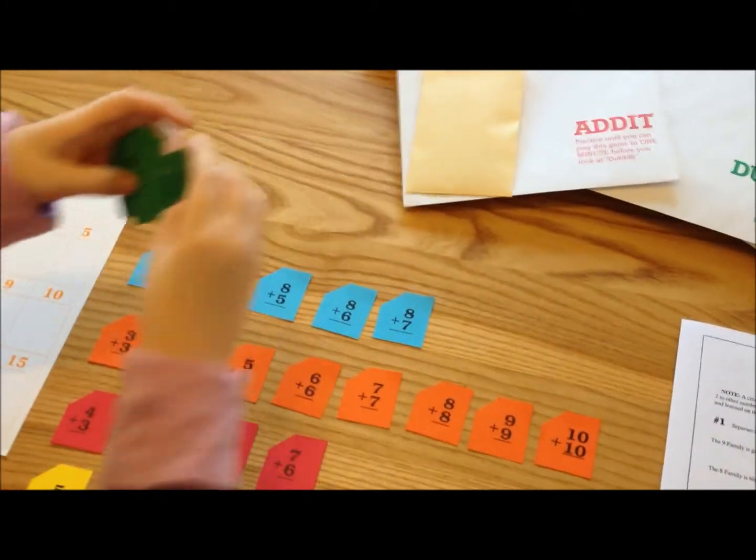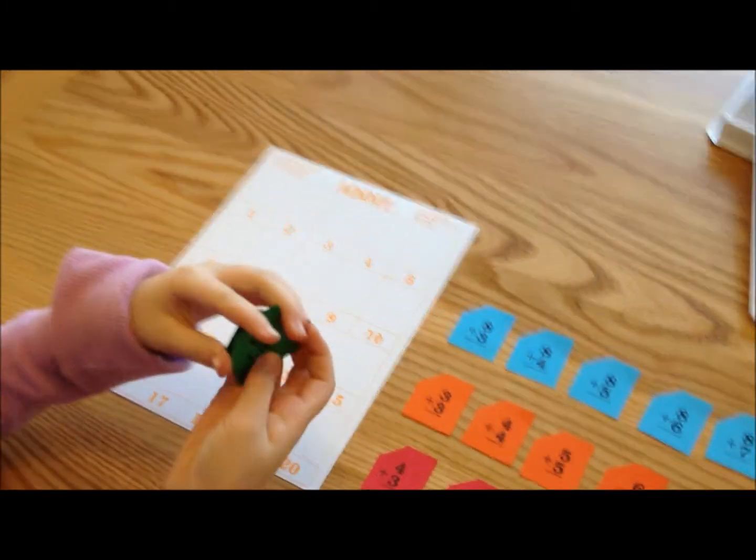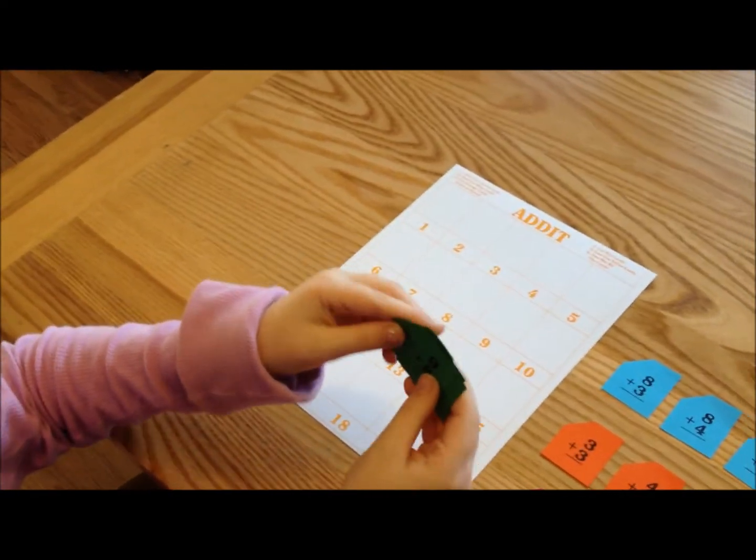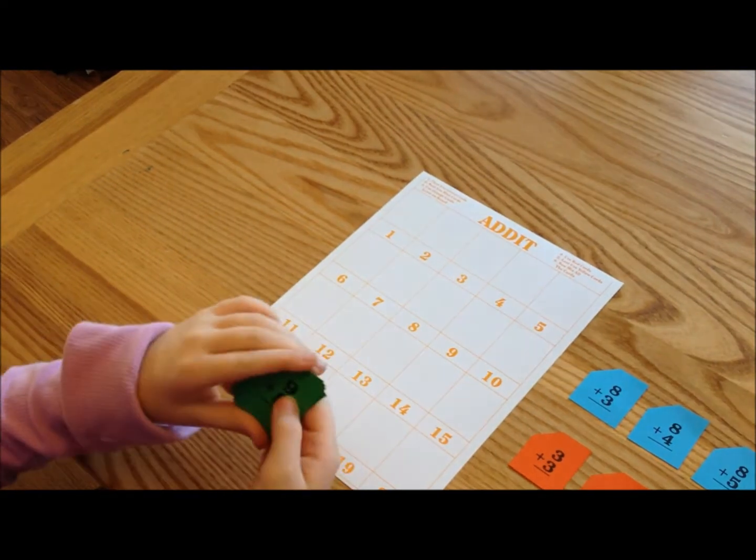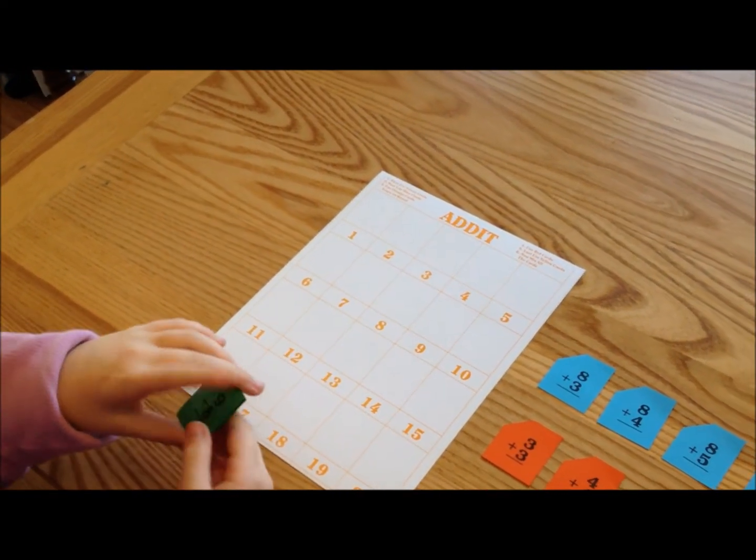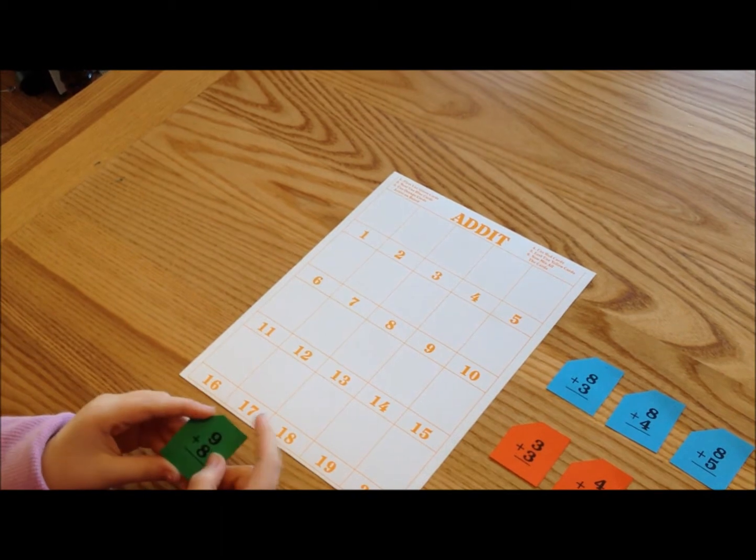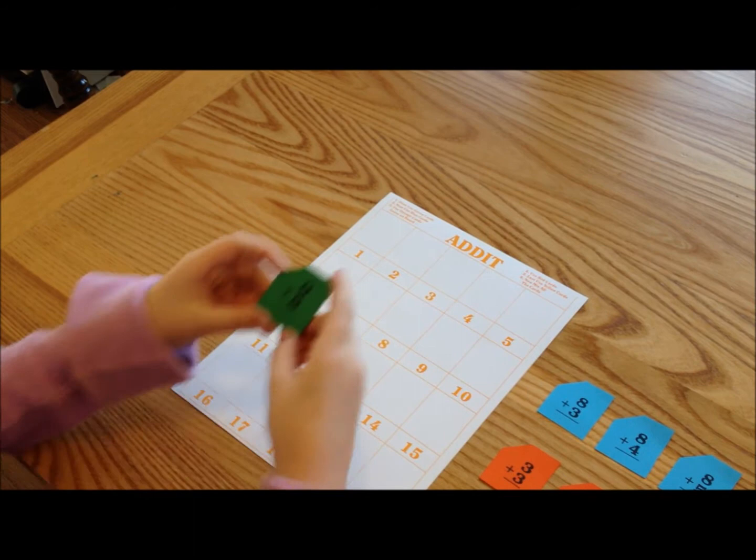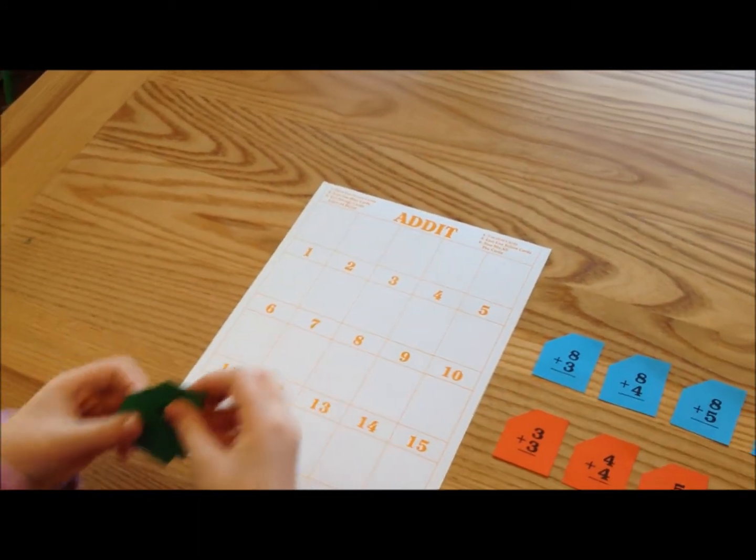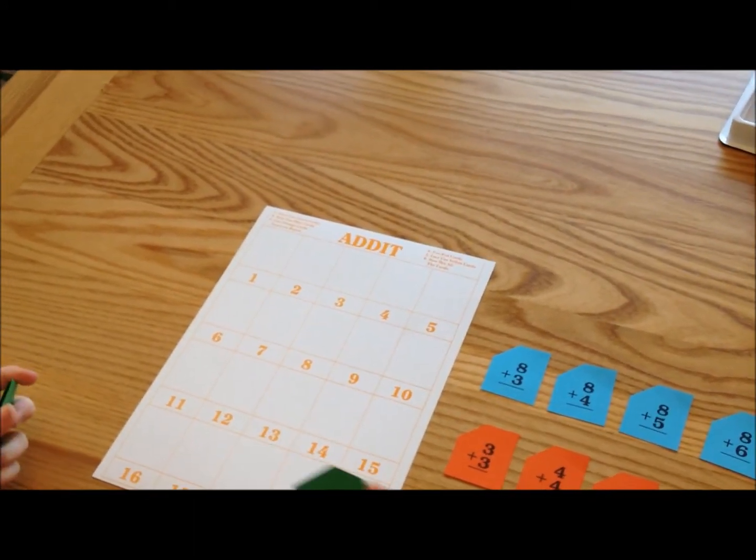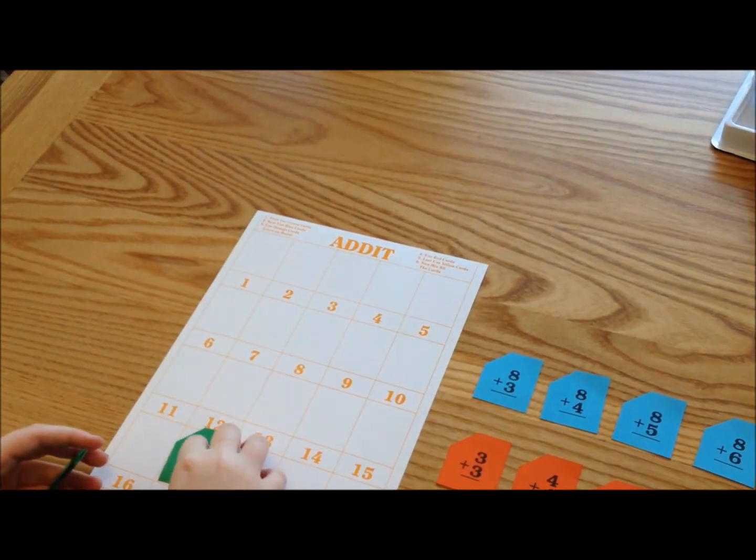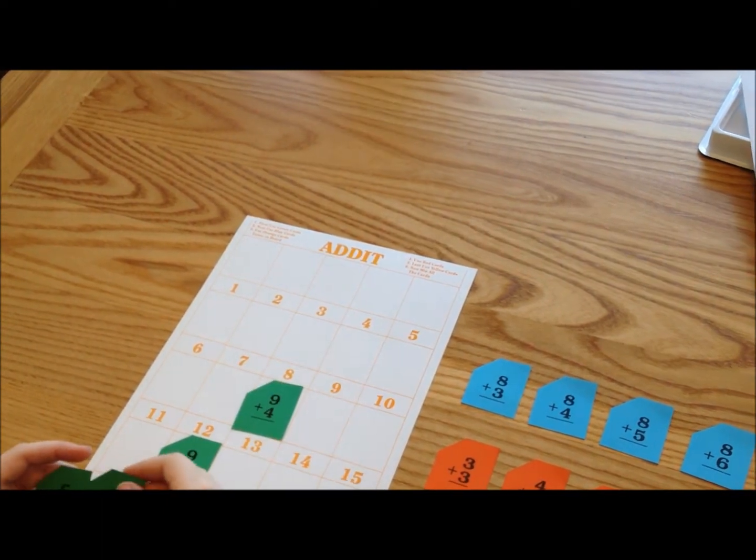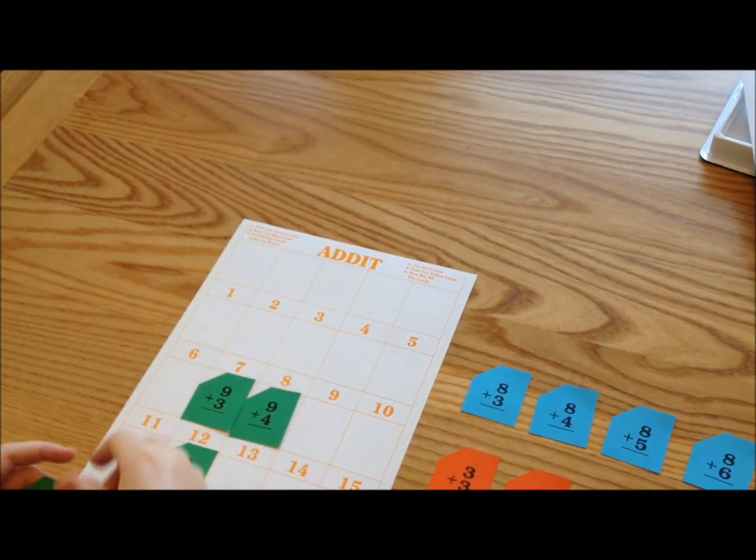So first what she is going to do is once she learns, there is a trick to the green cards, and the instructions that come with it tell you that the 9 family, that's the greens, you'll soon notice that whatever 9 card you selected will belong on the answer square whose number is just 1 less than the number 9 is being added to, but with a 1 or teen in front of it.